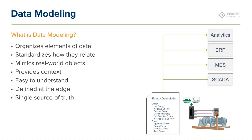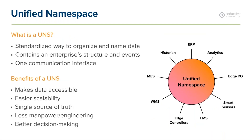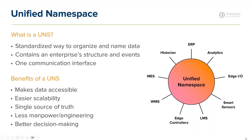Once we build that data model, we want to get that data everywhere — and this is really the unified namespace concept. A lot of companies are trying to figure out how to get their data into a centralized repository with a standard way to organize, name, and provide context to all that data — one communication interface where everyone can access it. MQTT makes it possible to get real-time data into a broker that many can consume, but a true UNS is more than real-time data. It's about storing IT information, OT information, and historical data. That's the exciting part — we're able to effectively give customers a working UNS.